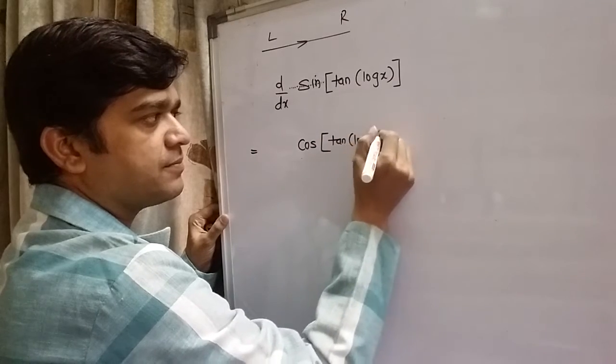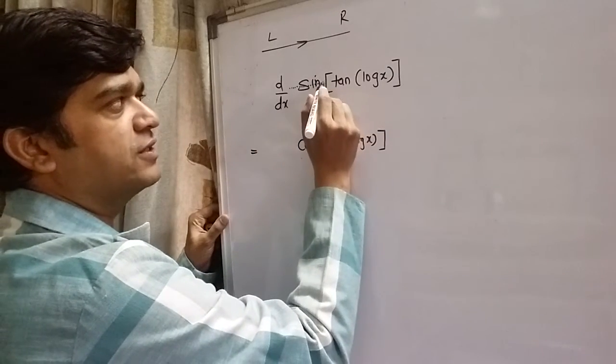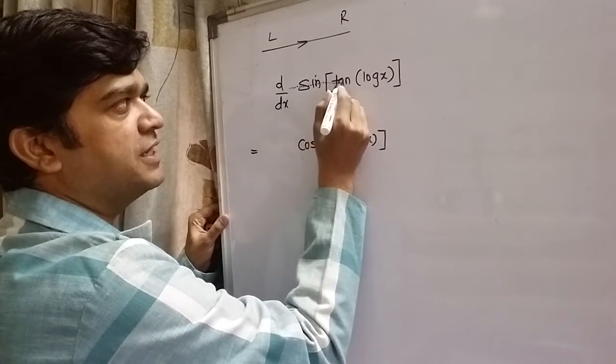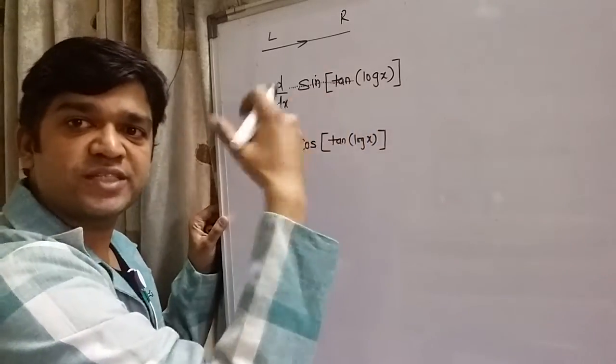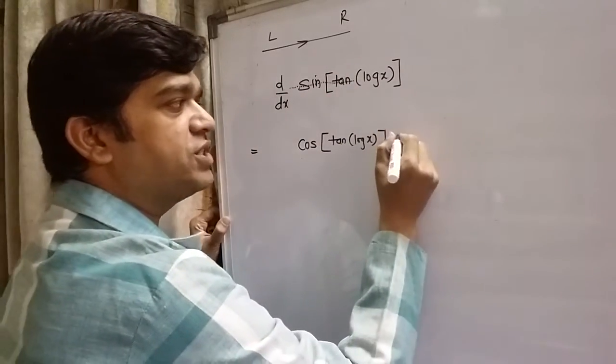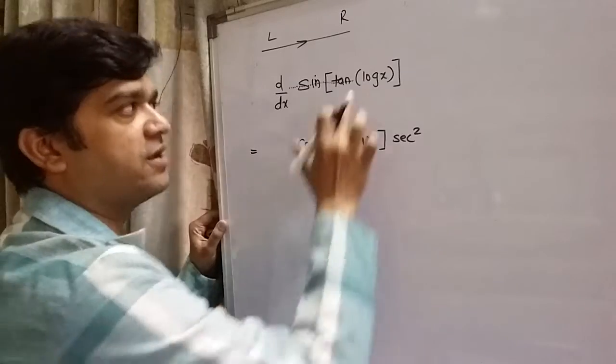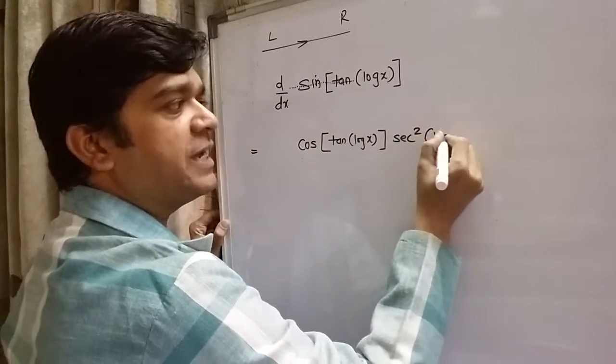Next, move your line further and see what it cuts. It cuts tan function. So what is the derivative of tan function? It is sec squared. The remaining part should be kept as it is.